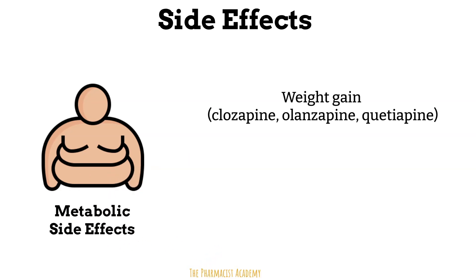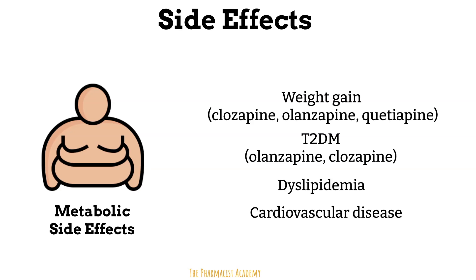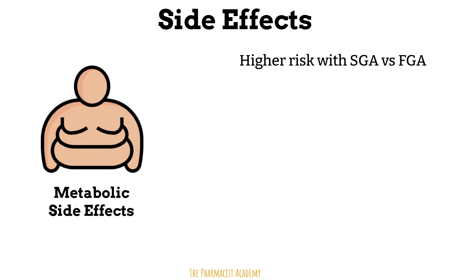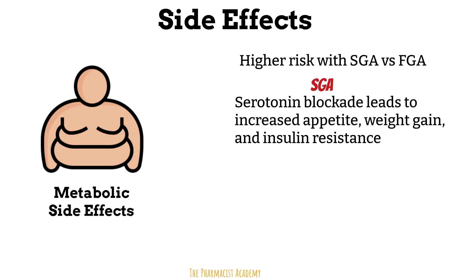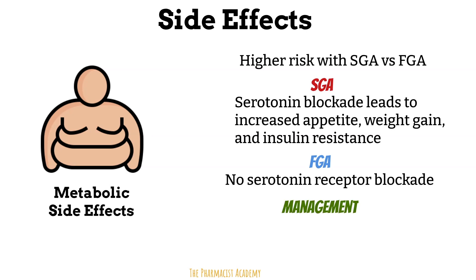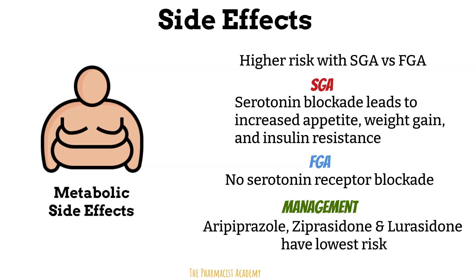Next, metabolic side effects. This can include weight gain, more commonly seen with clozapine, olanzapine, and quetiapine. Patients may also develop type 2 diabetes with olanzapine and clozapine, as well as dyslipidemia and cardiovascular diseases. In terms of these side effects, higher rates are seen with second generation antipsychotics versus first generation. The reason is that in addition to dopamine receptors, second generation antipsychotics block serotonin, which leads to these side effects — serotonin blockade not seen with first generation antipsychotics. These metabolic symptoms can be managed by switching to agents like aripiprazole, ziprasidone, or lurasidone, which have the lowest risk. Regular monitoring of weight, waist circumference, blood glucose, and lipid levels are all important for early detection.